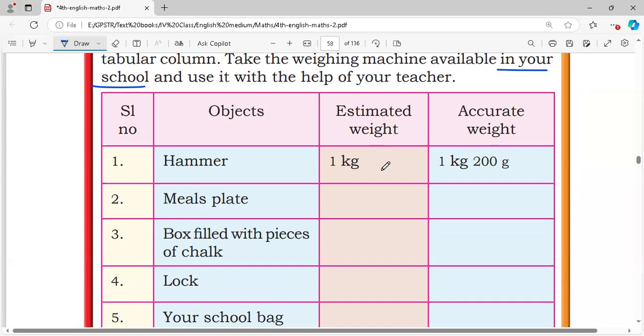I'll give you some examples. Serial number, objects, estimated weight, accurate weight.